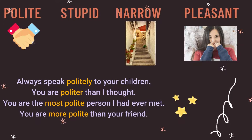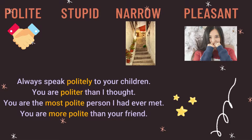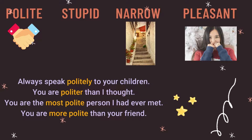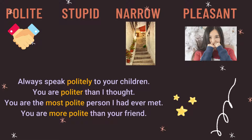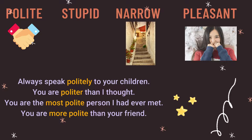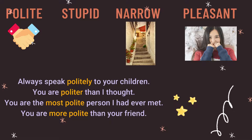Further Rule 7 words: polite, stupid, narrow, and pleasant. You can say pleasant, more pleasant, most pleasant, or pleasanter, pleasantest. For example: 'Always speak politely to your children. You are politer than I thought. You are the most polite person I have ever met. You are more polite than your friend.' All these forms are correct.